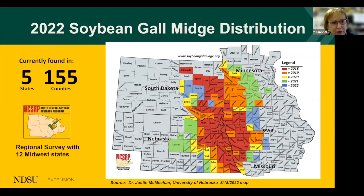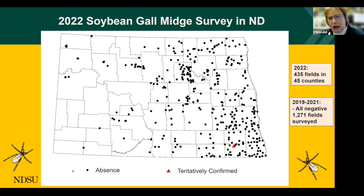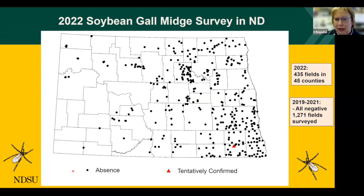The survey spans from Ohio west and south to Missouri and Kansas. From last year's survey work, all the black spots indicate negative results for soybean gall midge. Unfortunately, in Sargent County we have one tentatively confirmed find. We're still awaiting DNA results; however, earlier runs showed a 92% match to soybean gall midge genetics, and we found a very bright red-orange larvae in the field, so I'm convinced it is soybean gall midge.